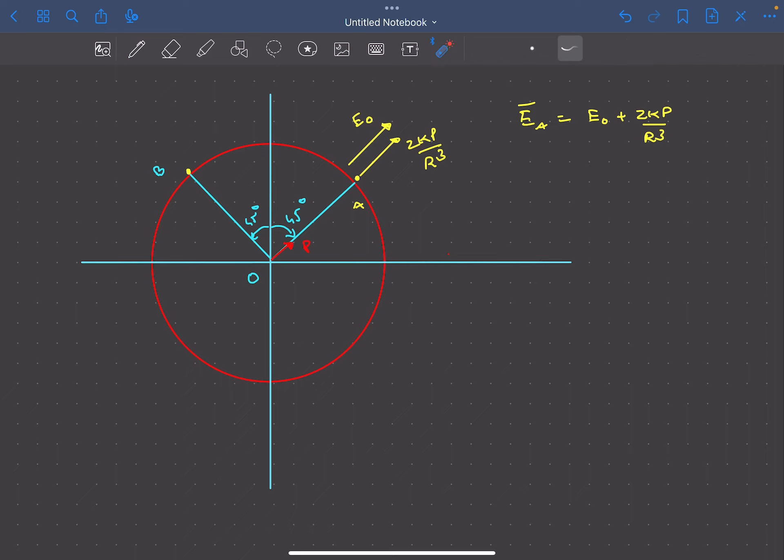Now let's talk about the electric field at point B. The direction of E₀ at point B will be in this direction as it's a constant electric field. Point B is in the equatorial position with respect to our dipole, which means the electric field at point B due to the dipole is kp/R³.